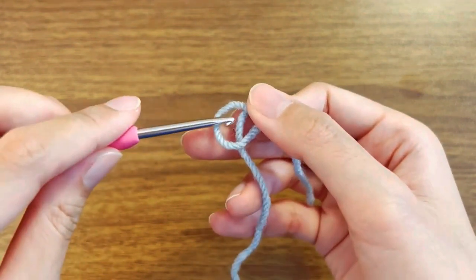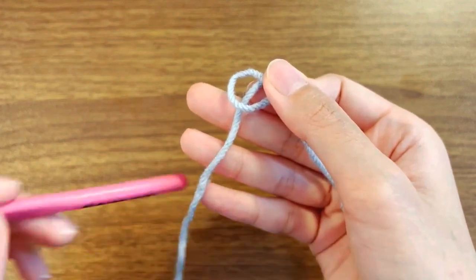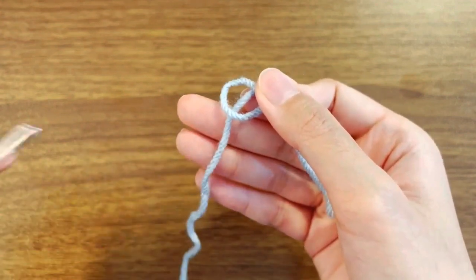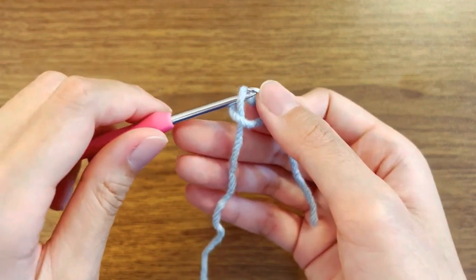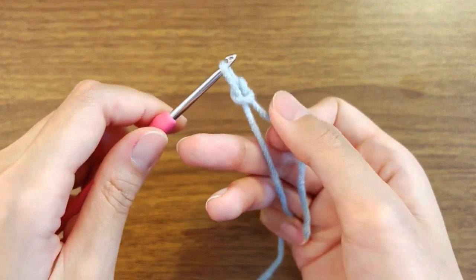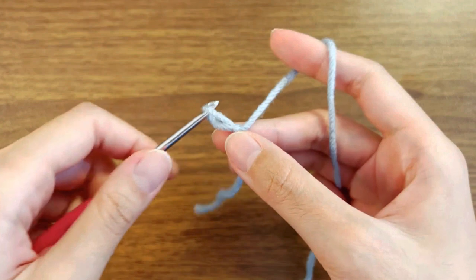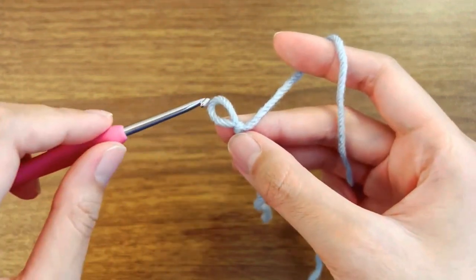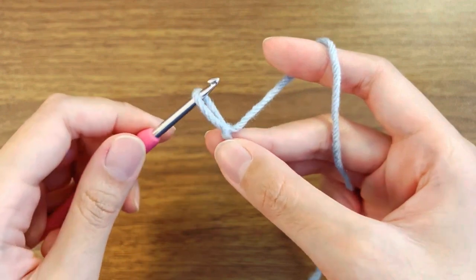Grab your hook and notice you have the short end of the yarn and the long end of the yarn. What I'm pulling the loop with is the long end. Pull it like that and you'll notice that you now have created a loop.